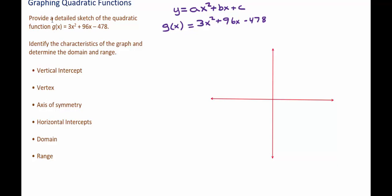In this problem, we are to provide a detailed sketch of the quadratic function given here. Then we will also identify the characteristics of the graph: the vertical intercept, the vertex, the axis of symmetry, and the horizontal intercepts, as well as finding the domain and the range of the function.